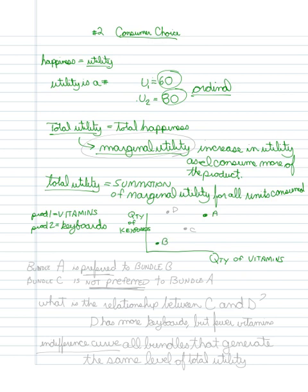If I put a bundle way out here, versus one here, which one would you want? You would probably want A over B. That bundle A is preferred to bundle B. Why? Because it has more of both goods. Let's throw one in the middle here.